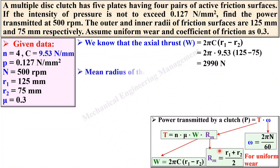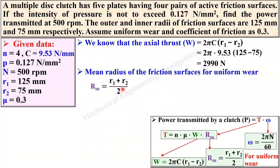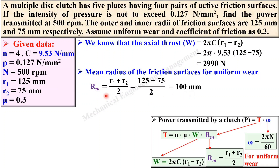Apply the equation for the mean radius of the friction surface. For the uniform wear theory, rm = (r1 + r2) / 2. Put the values and simplify to find rm. This is a radius, so it must be in mm.